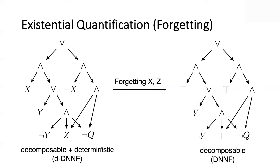The best way to explain the Tseitin transformation: if you have a circuit and want a knowledge base in CNF form, you add variables for every wire — X, Y, Z, W — and then write clauses relating these local variables. You can construct a knowledge base in CNF easily. Now it's not only over the input variables but also over these additional wire variables. But you get the guarantee that if you project that formula onto the input and output, you get back your original thing.